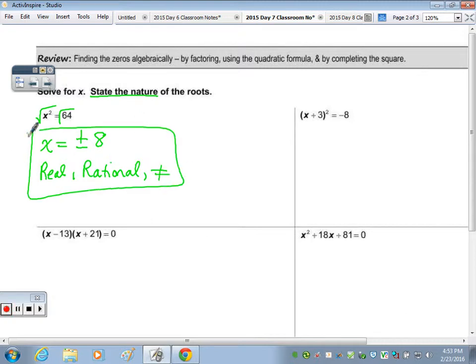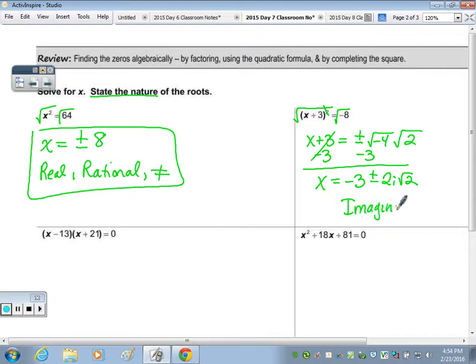I would also do the square root method to the equation on the right. To get rid of the square. And I have x + 3 = ±√(-8), which factors to 2i√2. I'm going to subtract the 3 and then simplify it all in the same step. So x = -3 ± 2i√2. These are imaginary roots because of the i.